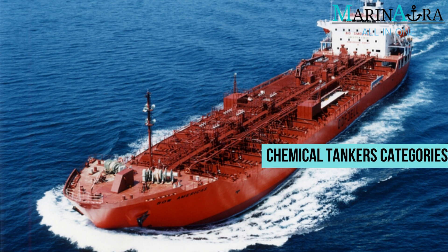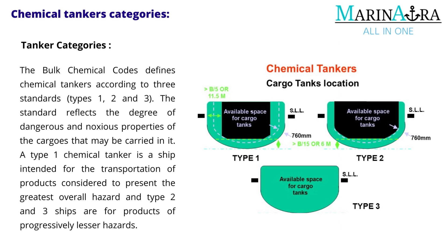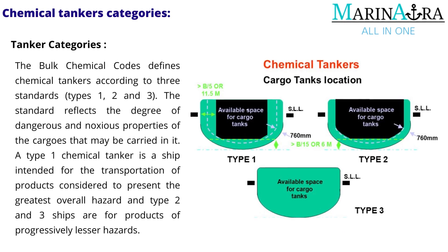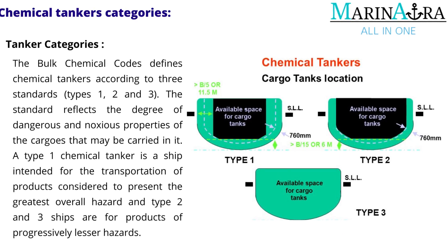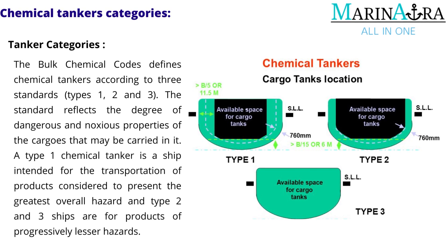In today's video, let's see the chemical tanker categories. The bulk chemical codes define chemical tankers according to three standards: types 1, 2, and 3.